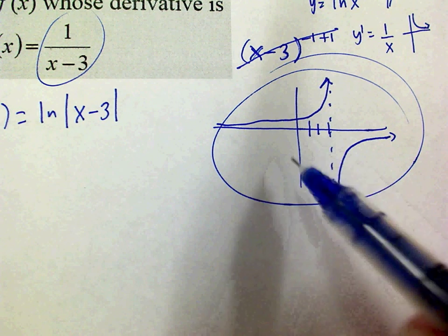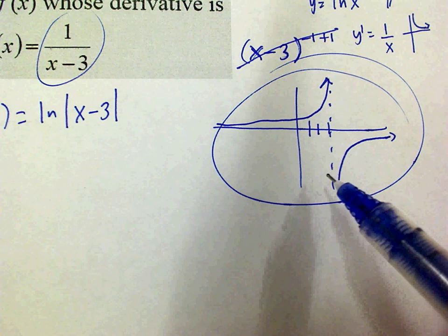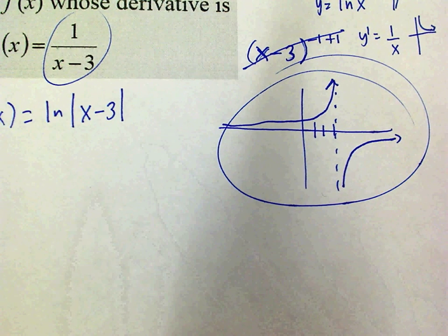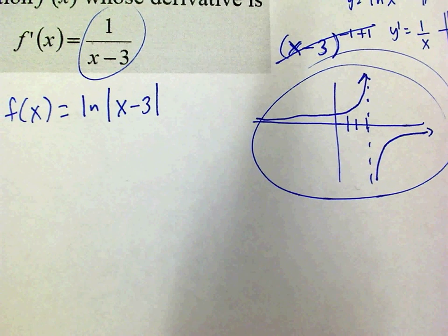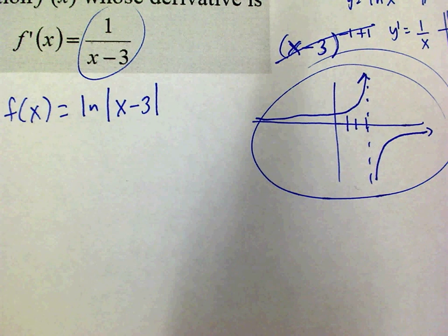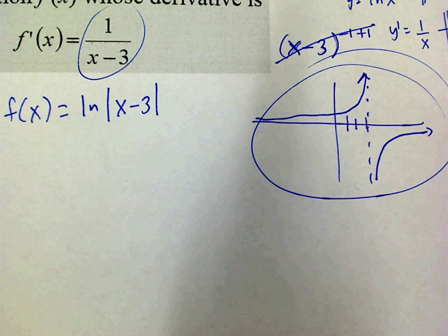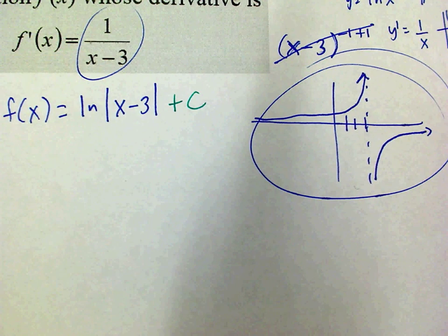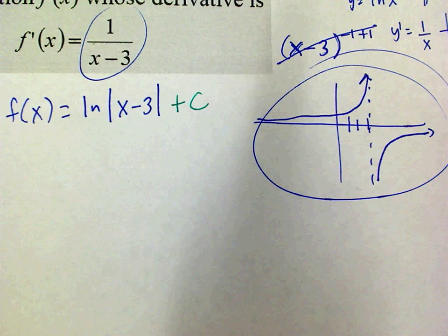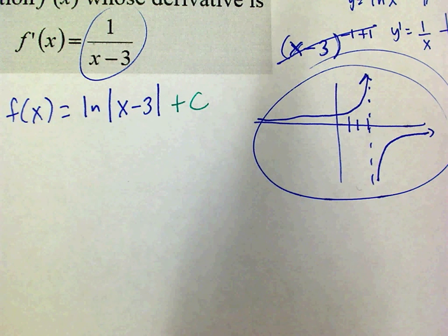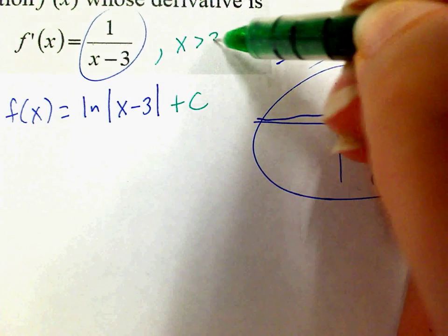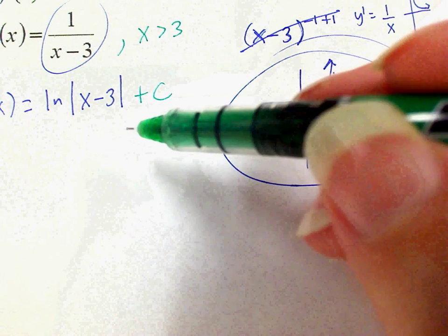Now, when I think about the natural log function, if I told you the function is natural log of x, what's its derivative? 1 over x. But there's a stipulation. Natural log is only defined on this side, so my derivative is only defined on that side. But this derivative is defined everywhere. Which is why my answer actually is going to be f of x equals ln of the absolute value of x minus 3, so that the original function is defined on both sides of the asymptote. Now guys, on your homework, it might say comma x is greater than 3, in which case you don't have to worry about the absolute value, and in fact you shouldn't put them because it's only talking about this side.